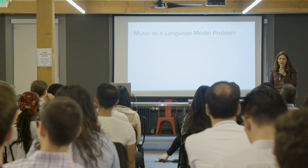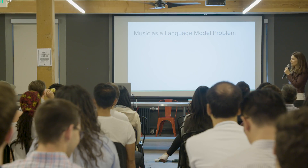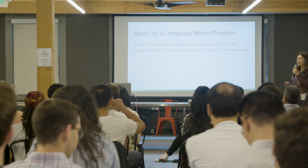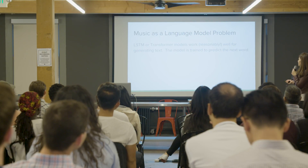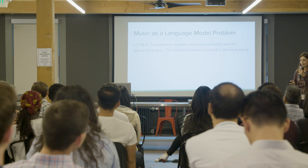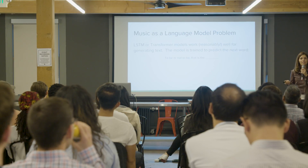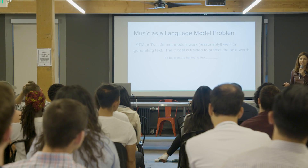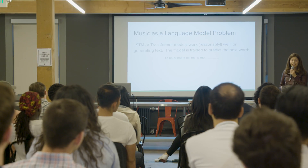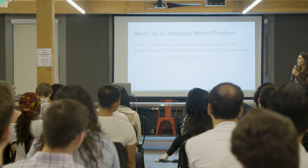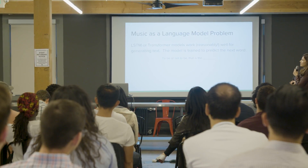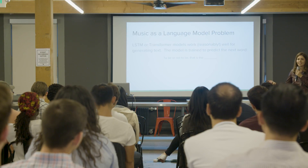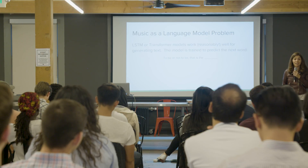A nice way to think about music generation is to think about it as a language model problem. For language modeling we usually use an architecture like an LSTM or a transformer. We train it on the task — we give it a prompt sentence or a sequence of words and then ask it what should the next word be. And once you have a model that's really good at this, it's pretty convenient to turn it into a generator. You just take the predicted word, feed it back into the model, then ask it to predict the next word, and you can create a text or piece of music as long as you want.